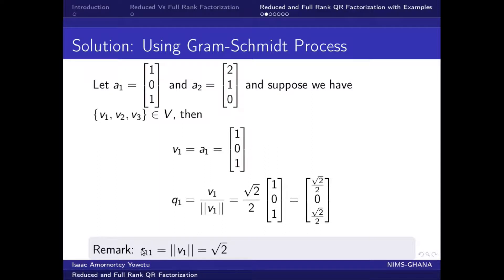Remember, our R11 — that is, the norm of V1 which we obtained, which is root 3 — is the same as the row 1 column 1 element of our right upper triangular matrix.